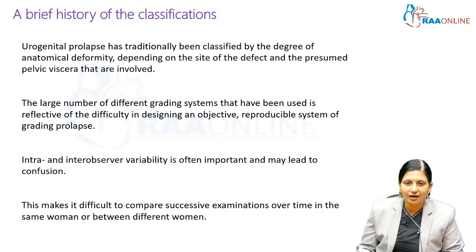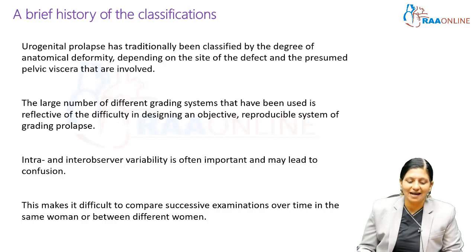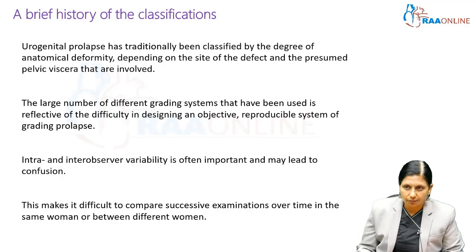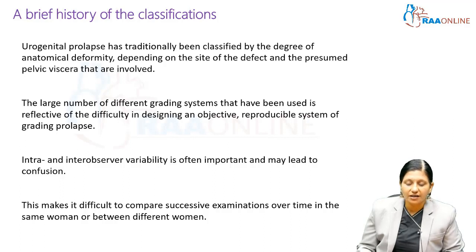Urogenital prolapse was traditionally classified by the degree of anatomical deformity depending on the site of the defect and the presumed pelvic viscera involved — whether it was a cystocele, urethrocele, rectocele, enterocele, or deficient perineum. However, the large number of different grading systems that have been used is reflective of the difficulty in designing an objective and reproducible system for grading prolapse.